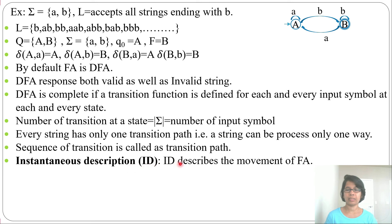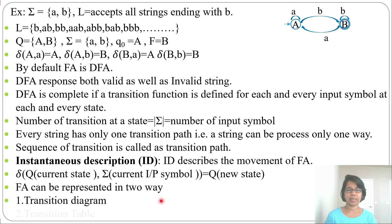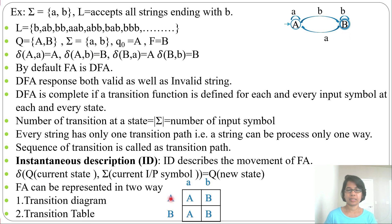Next is instantaneous description or ID. An ID describes the movement of the FA: the transition function delta(Q, sigma) = Q shows the current state, the current input symbol, and the new state it moves to — that is called the instantaneous description or ID. An FA can be represented in two ways: first is the transition diagram and another is the transition table. This diagram we have drawn is the transition diagram. In the transition table, the rows are states A and B, columns are input symbols a and b. From state A by a it goes to A, by b it goes to B; from state B by a it goes to A, by b it goes to B.